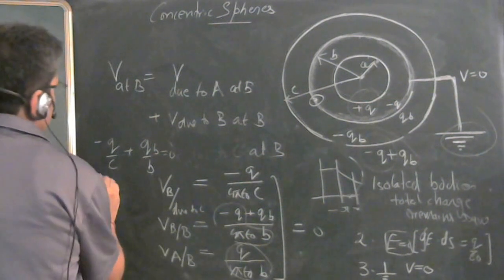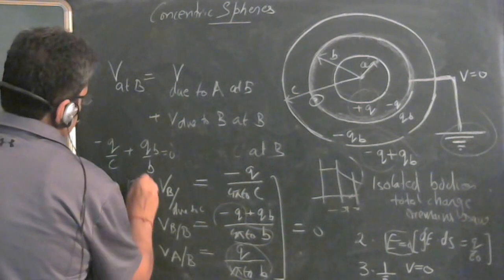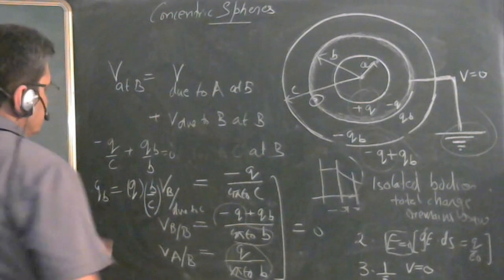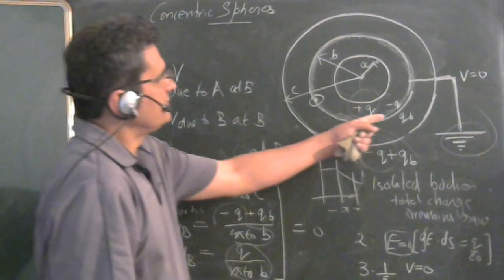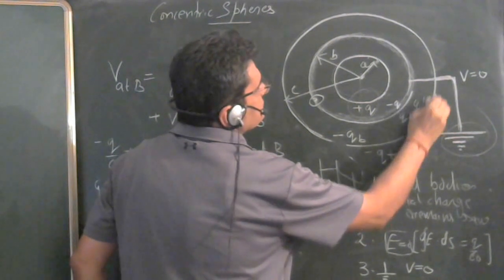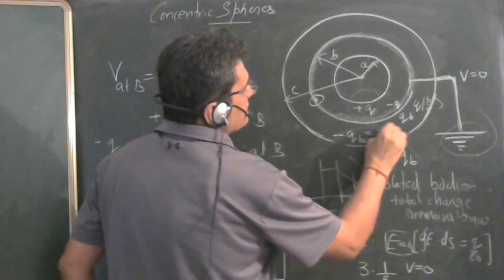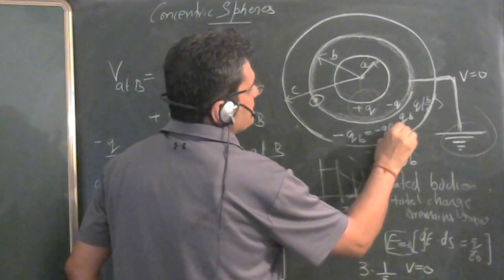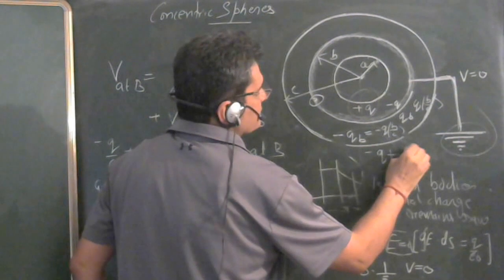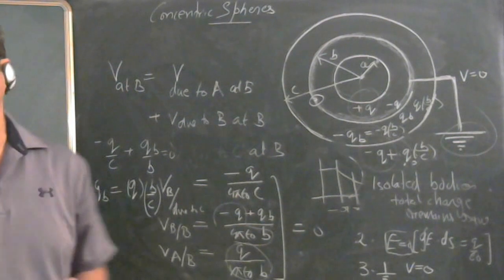So QB is equal to Q into B upon C. That is the value of charge appearing here. So it will be Q into B upon C. And here it will be minus Q into B upon C. And here it will be Q minus Q plus Q into B upon C. So this solves the problem.